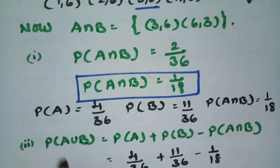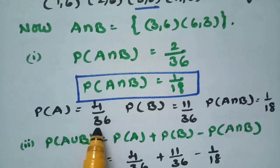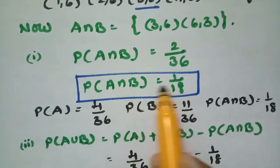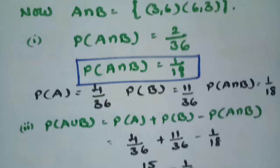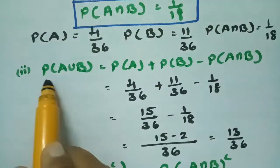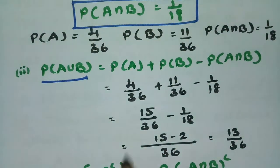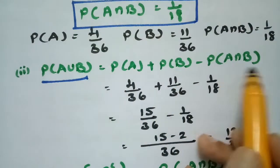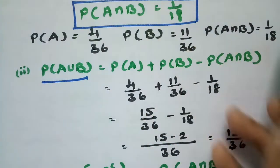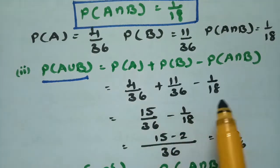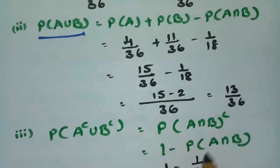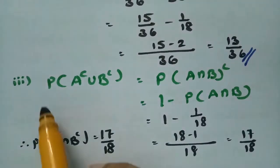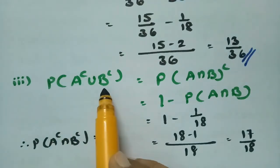Therefore probability of A intersection B is 1 by 18. Now, P(A) = 4/36, P(B) = 11/36, and P(A∩B) = 1/18. Using the addition theorem, P(A union B) = P(A) + P(B) − P(A intersection B) = 4/36 + 11/36 − 1/18 = 13/36.